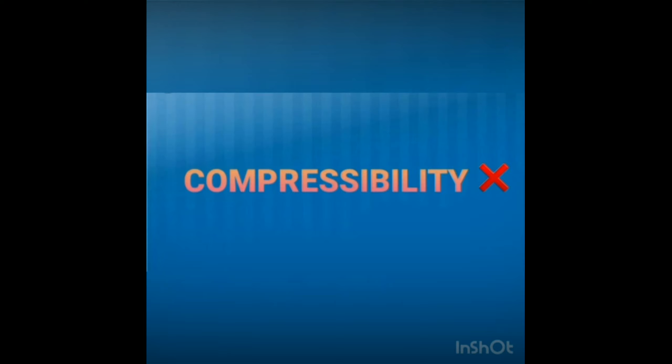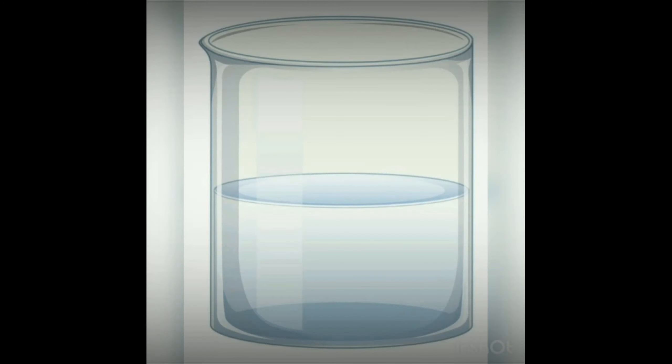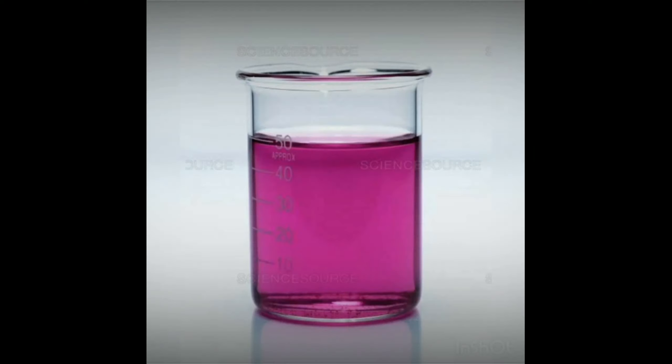Solids undergo diffusion, but the rate of diffusion in solids is very low compared to liquids and gases. To demonstrate this, take a beaker full of water and add a few crystals of potassium permanganate. Initially the potassium permanganate is purple-black in color, but when added to the water, the water color changes to pink or purple.